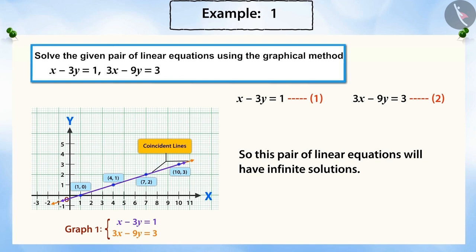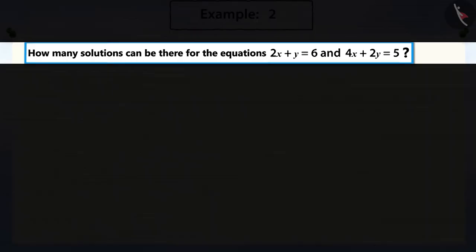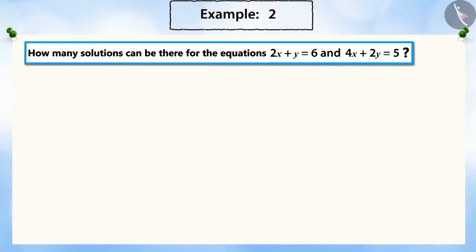Now, let's see another example. How many solutions can be there for the given pair of linear equations? 2x plus y equals 6 and 4x plus 2y equals 5. How will we find it? Can you find any relation between the coefficients and the constant terms of the given equations?